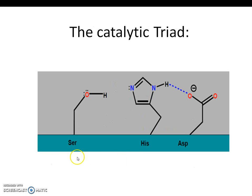This is the chymotrypsin enzyme with the catalytic triad: serine, histidine, and aspartate.